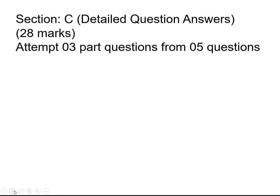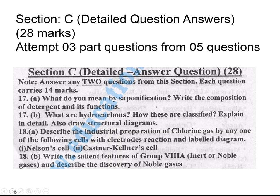Section C has detailed question answers. In this section you have three questions, each question has two parts. You have to attempt two questions, giving you a total of four questions to choose from. One question carries 14 marks. This section includes long question answers, detailed question answers, chemical processes, industrial processes, and manufacturing of different products — all from the whole book.